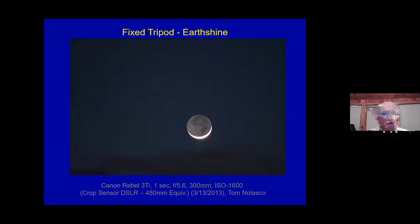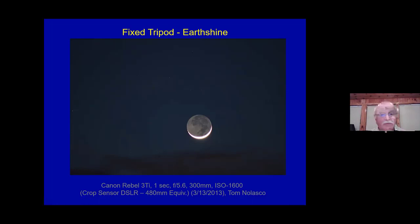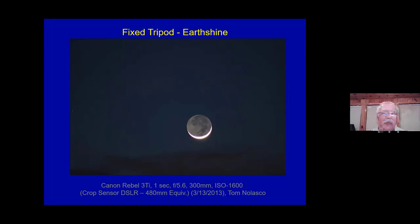Earthshine is another great target. You can see the dark portion of the moon lit up by light reflected from Earth, and when the crescent is very thin you can even see mountain peaks popping up on the bright limb. The prime range for earthshine photography is from about one to three days old — the moon isn't too washed out, and you get a nice lit Earth-side portion.